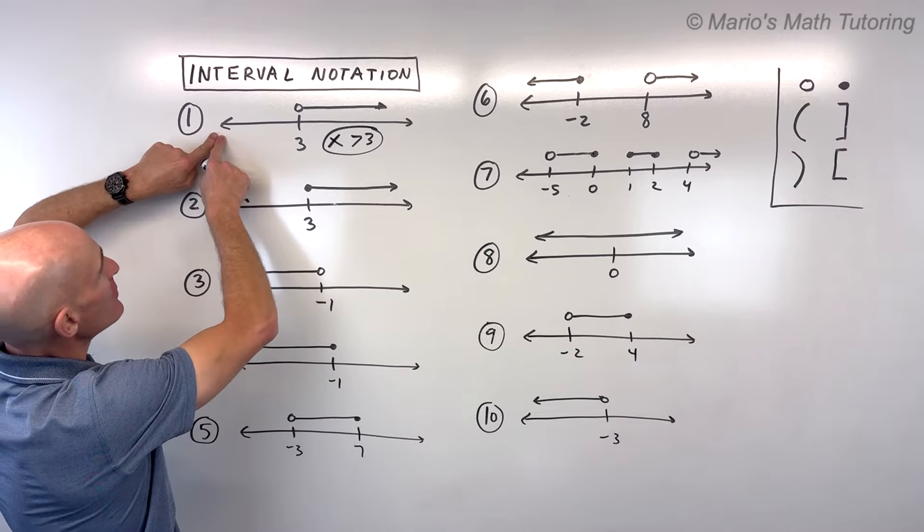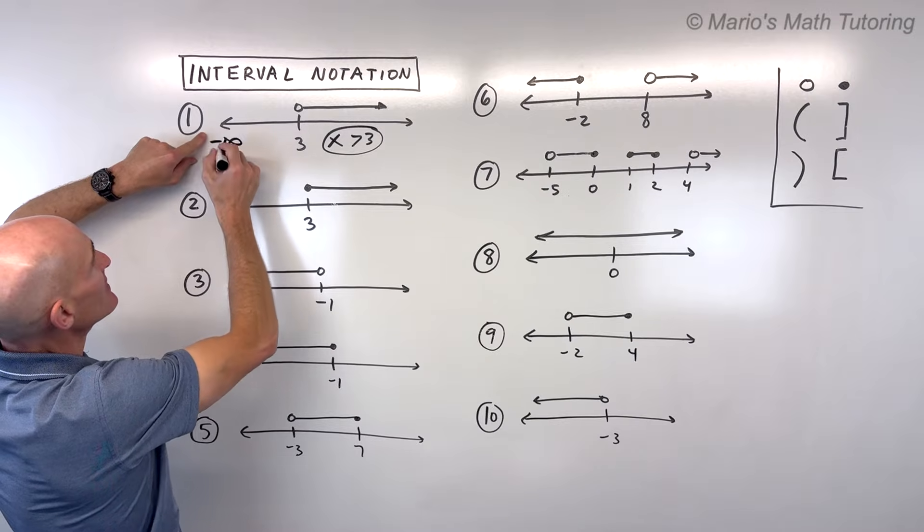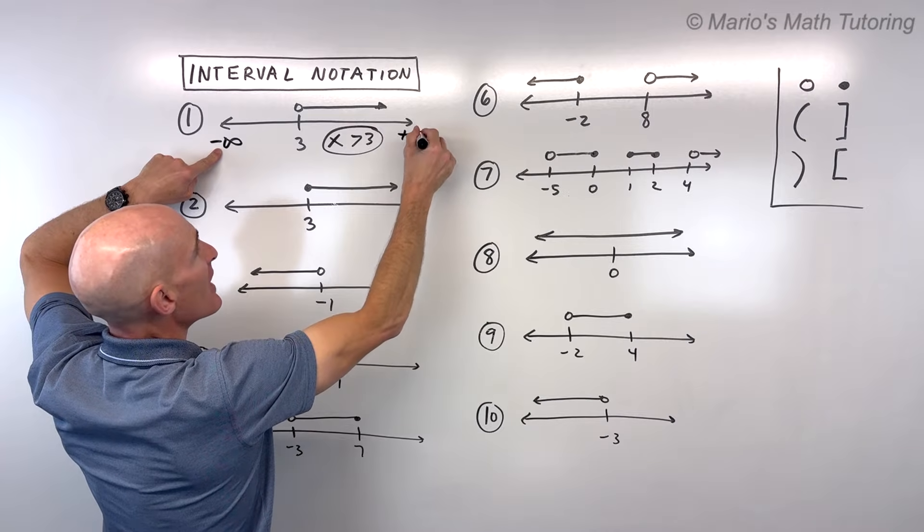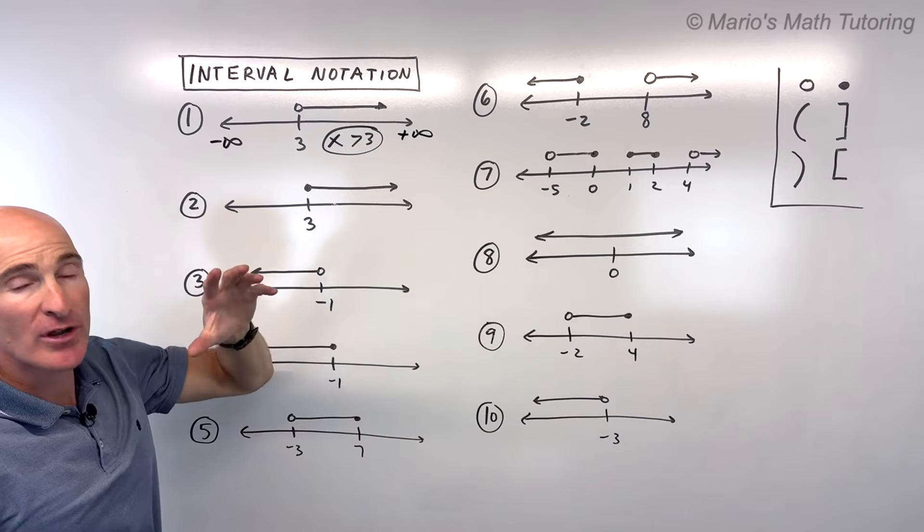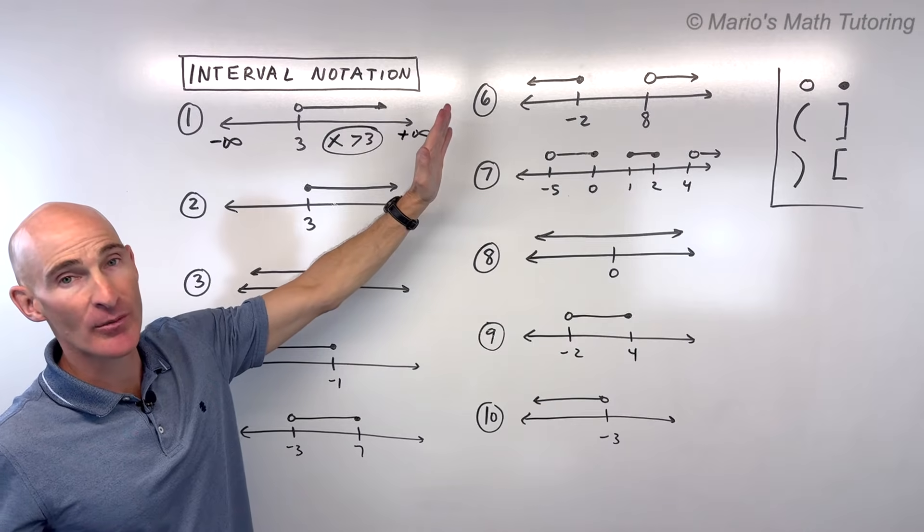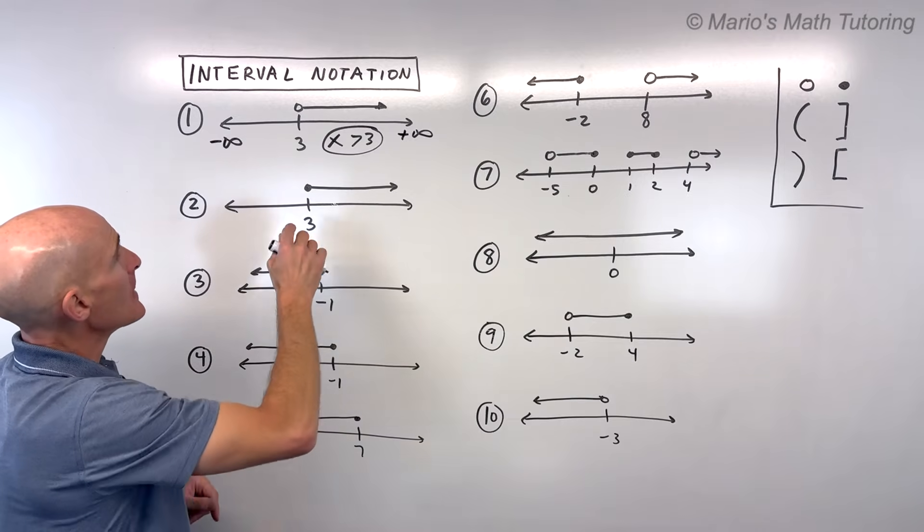What I like to do is, over here on the left side of the number line, this is negative infinity. All the way to the right, you could write this as positive infinity. When you write your interval notation, you want to work from left to right on the number line, from the lower numbers to the higher numbers. Always want to do it in that order.